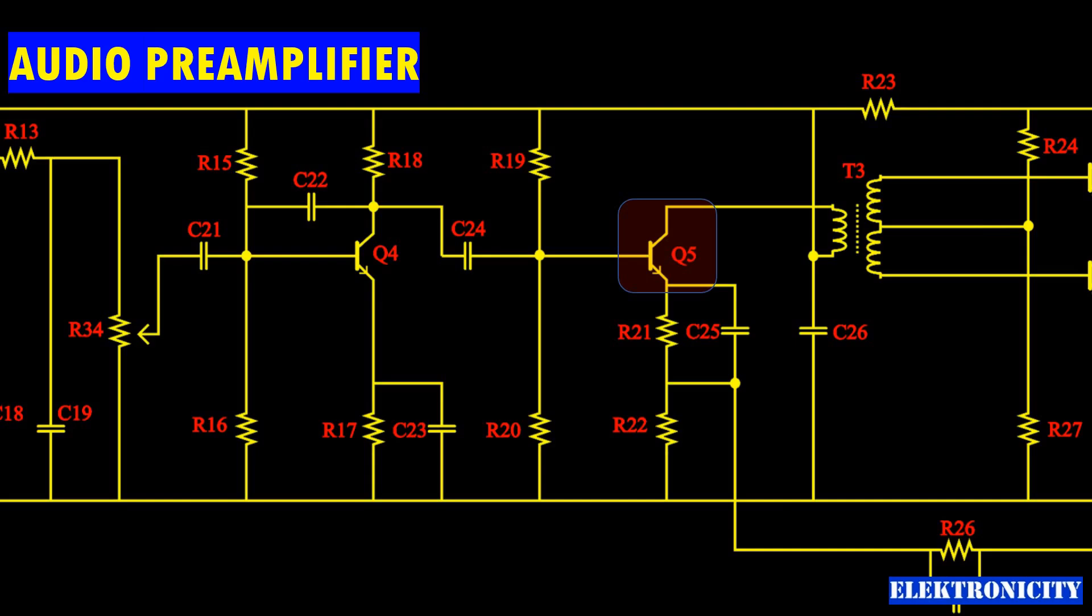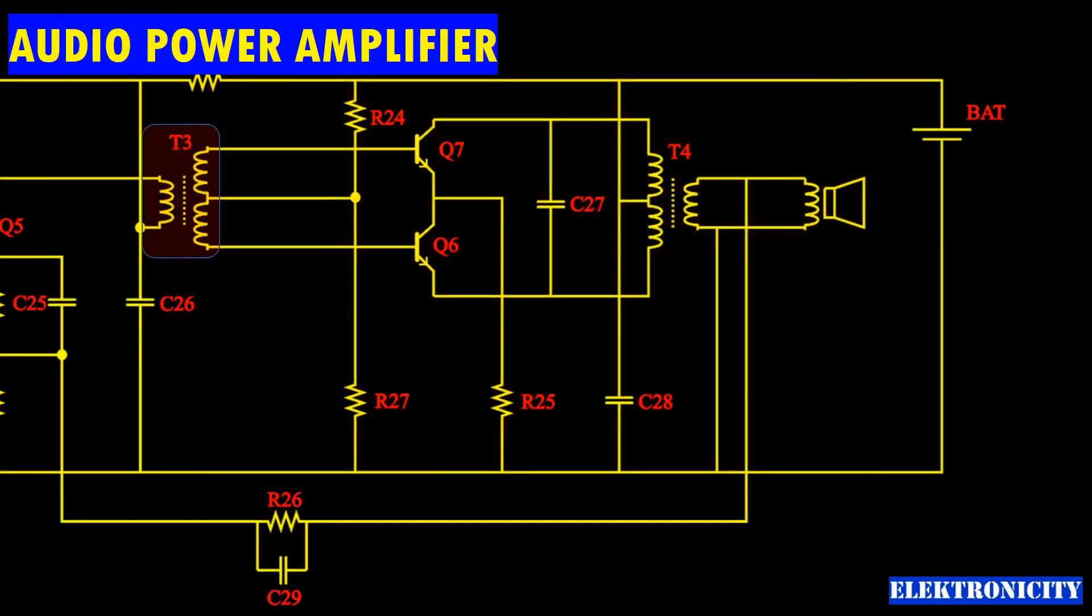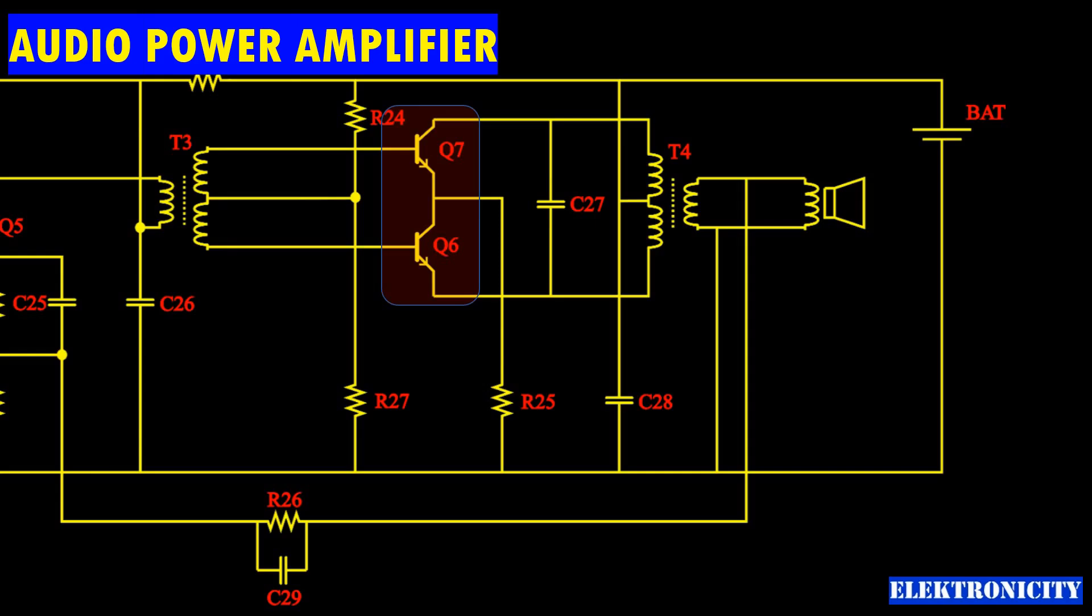Audio power amplifier: T3 inverts the phase of signals at the base of Q7 relative to the phase at the base of Q6.